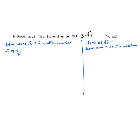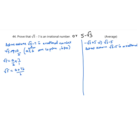Where a and b are co-primes and b is not equal to 0. Then √5 will be — moving 7 to the other side — a/b + 7, which by cross multiplication gives (a + 7b)/b.